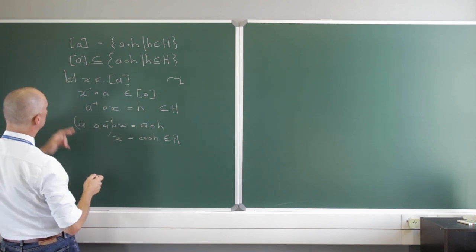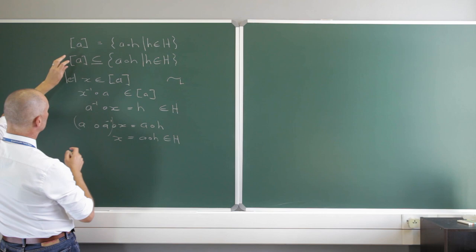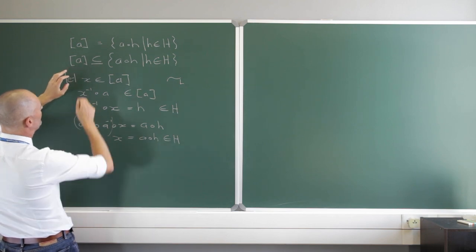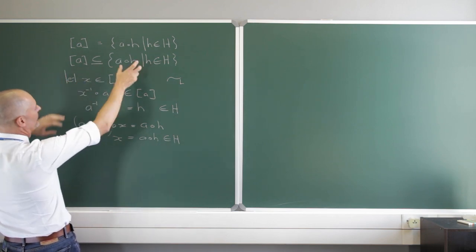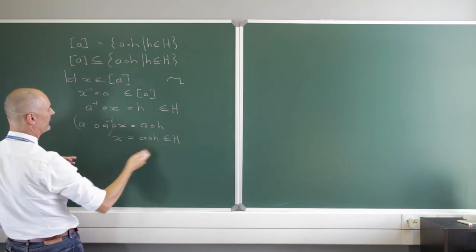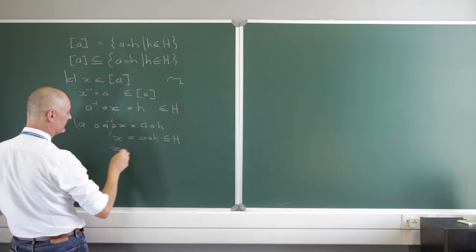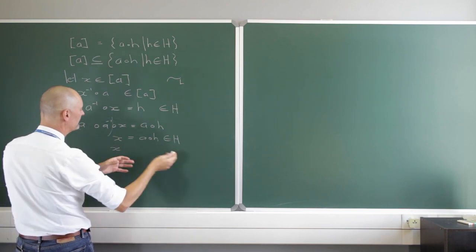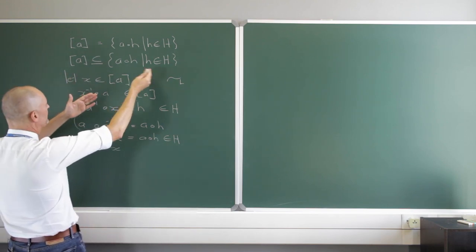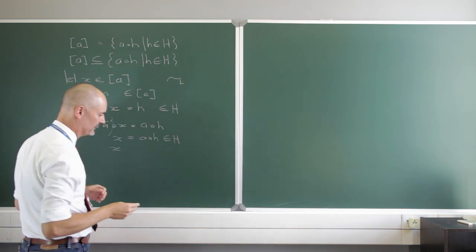So I've shown that if X is in this equivalence class, then X is in AH. In other words, the equivalence class is a subset of AH. I've shown the containment in this direction.